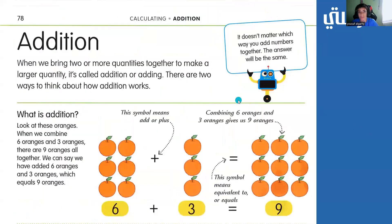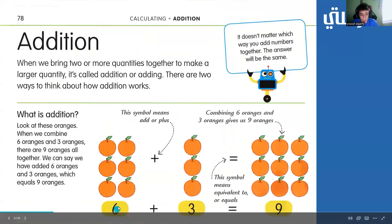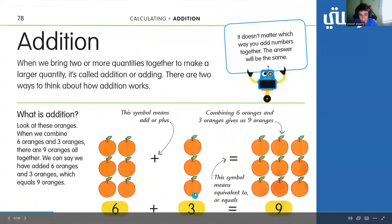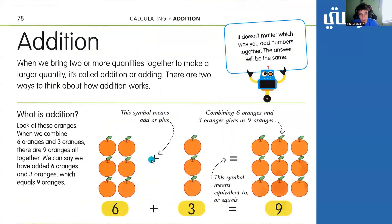So, what is addition? Addition is the combination of two numbers. So here, for example, we have the number 6 — 1, 2, 3, 4, 5, 6 — and we want to add it to 3 — 1, 2, 3. This plus sign right here is the addition symbol, and this equal sign right here shows what the two combinations will be after they're combined.